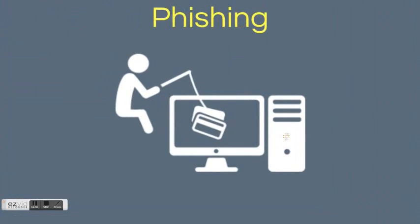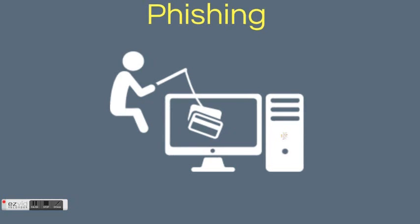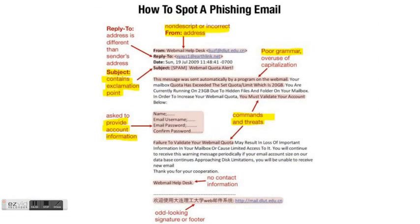Next, phishing is the attempt to acquire sensitive information. One may receive emails from someone pretending to be someone you already know. The emails are designed to trick you into giving away personal information such as usernames and passwords, credit card details, and more. This is an example of a phishing email. As you can see, the email address is usually incorrect, there is a tone of urgency, the subject line contains an exclamation mark, it contains grammatical errors, it asks for username and password, and there is usually a threat embedded in the message saying failure to update information may result in loss of something.